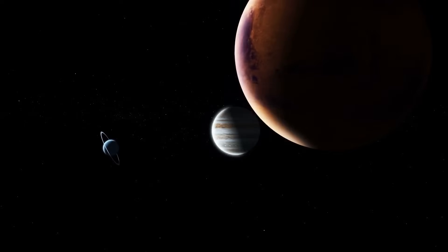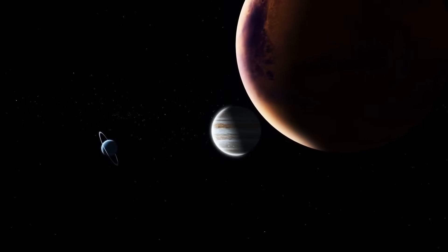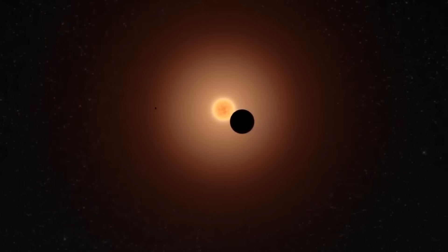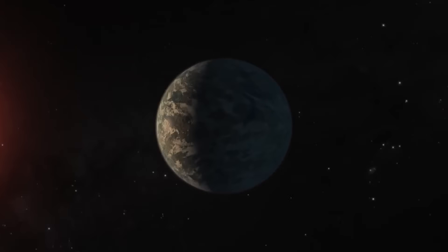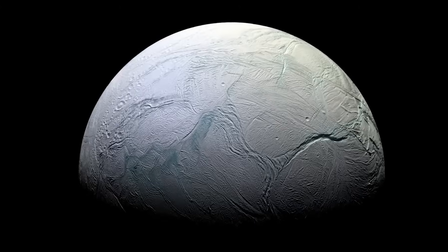These planets are huddled incredibly close to their dim host star, so close that all seven would easily fit within the orbit of Mercury. Because the star is much cooler and smaller than our sun, the planets aren't scorched.